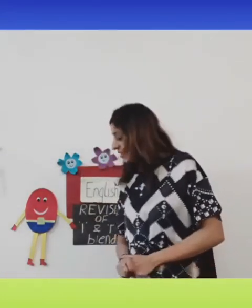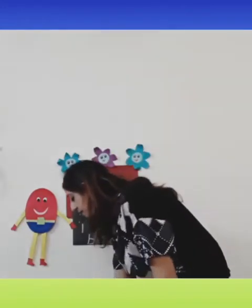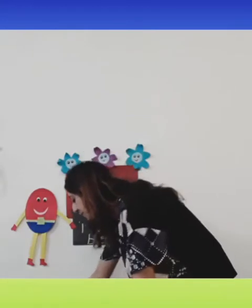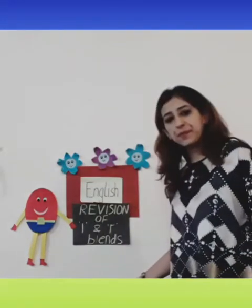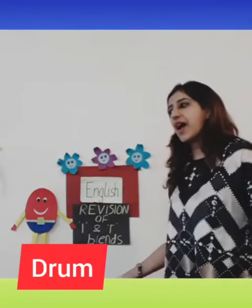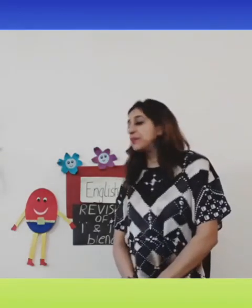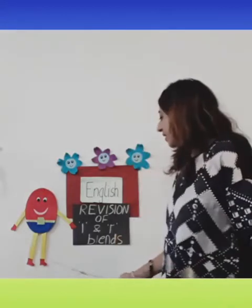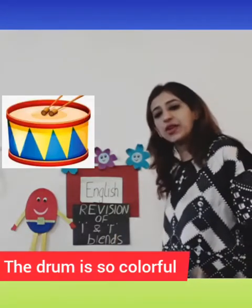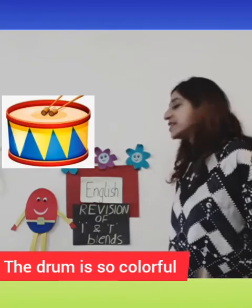Now we move on to the next word. What sound does this letter make? D. And this letter — R. Together we hear the sound 'druh'. And what word can we form with this sound? The word is 'drum'. And what sentence can we make with the word drum? The drum is so colorful.